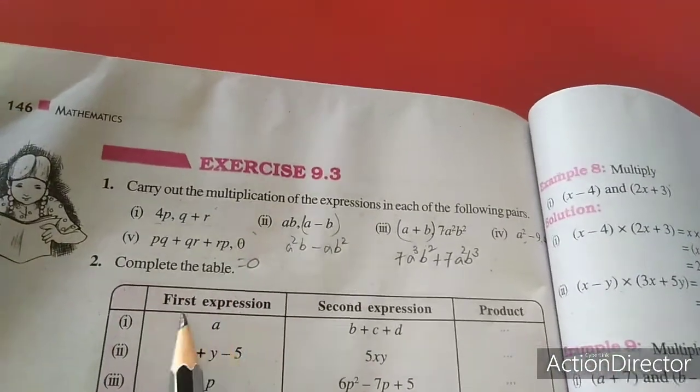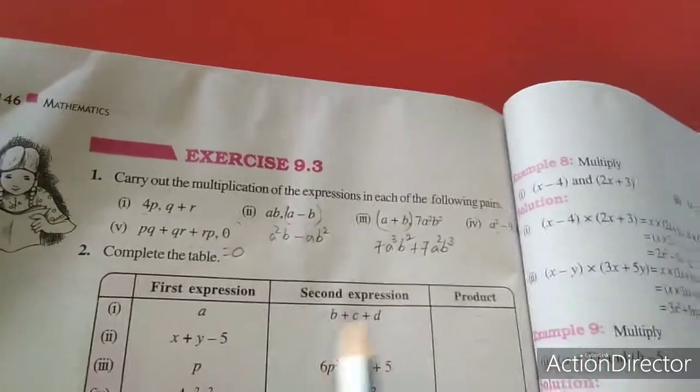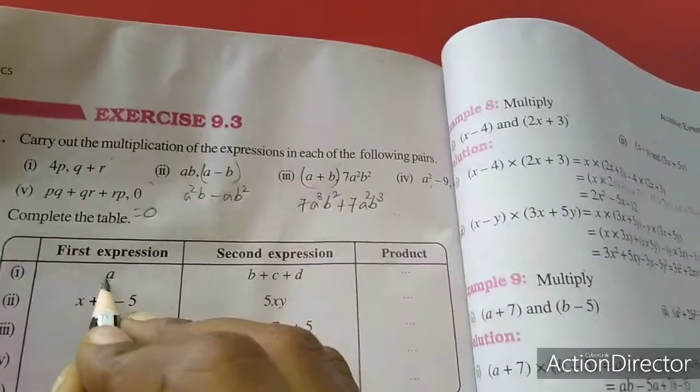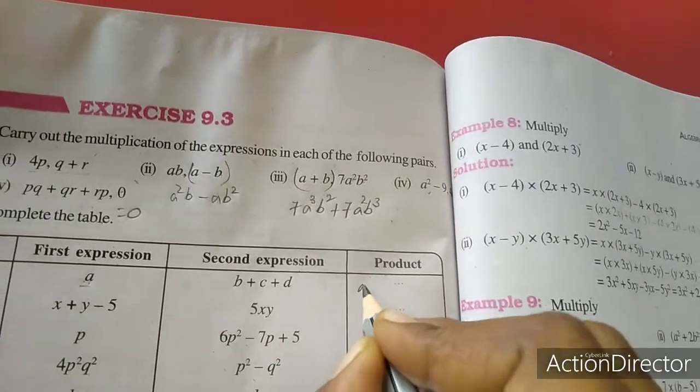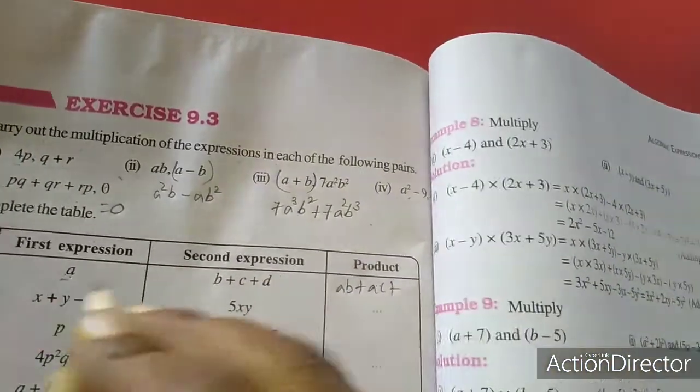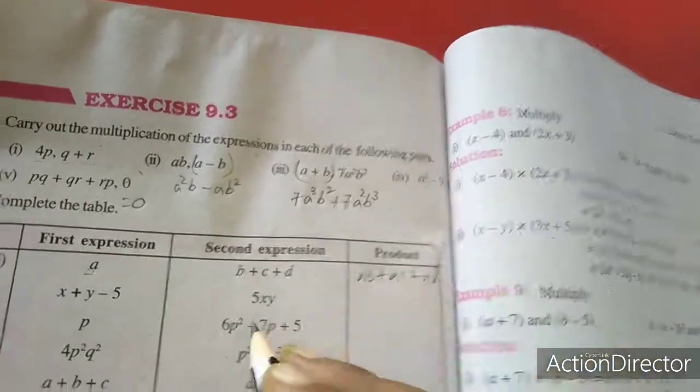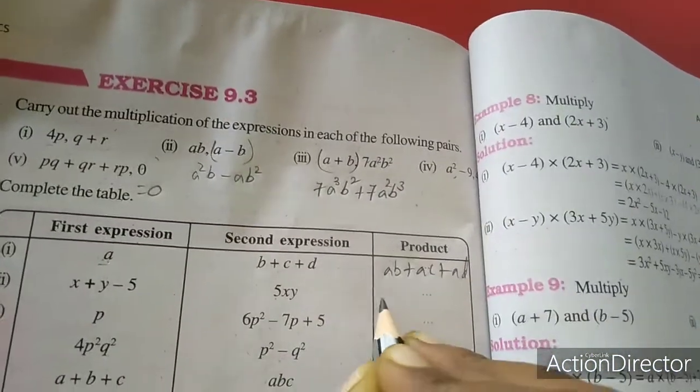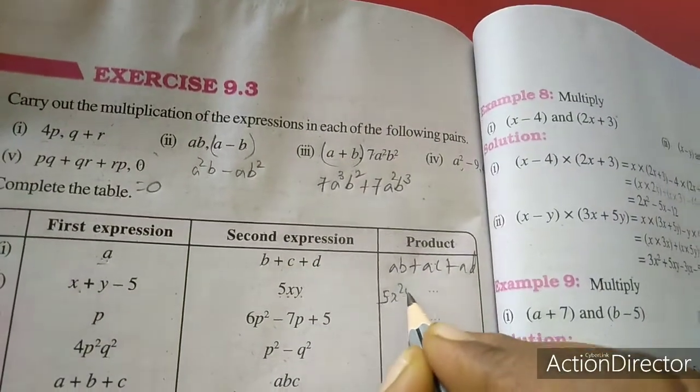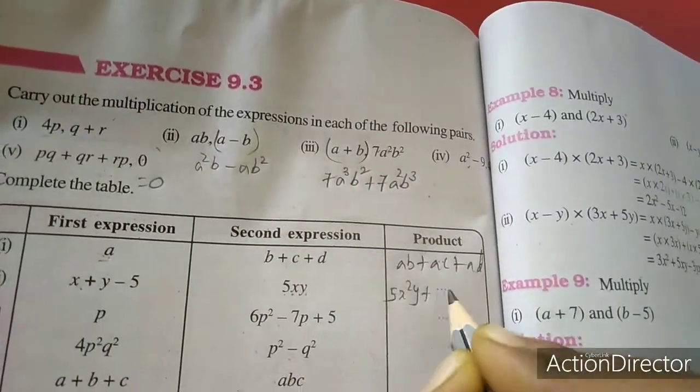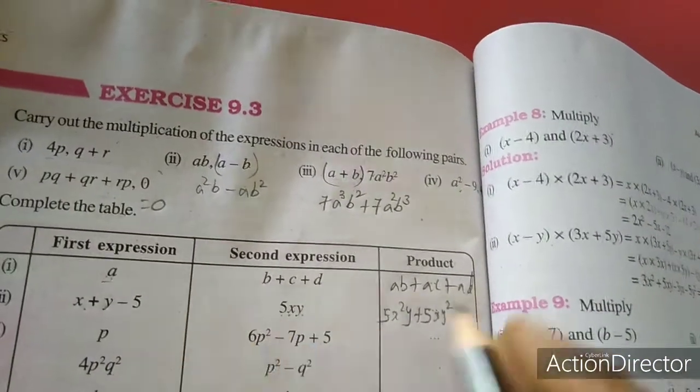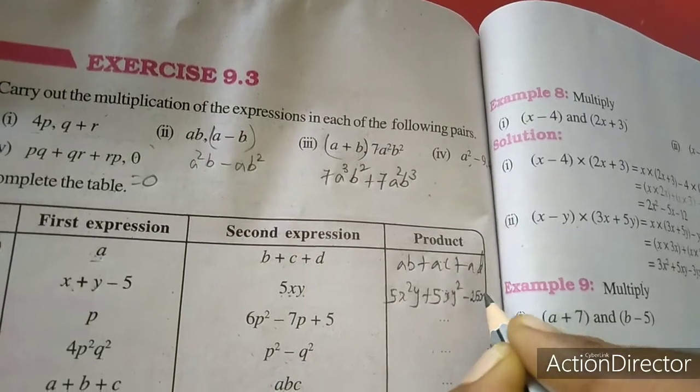See here, complete the table. First expression, second expression. This is a, a, b into c is a, c, plus a into d is a, d. So a, c, plus a into d is a, d. So 5, x, y into x, so x squared y, plus 5, x, y squared. Minus 5, 5, 25 into x, y.